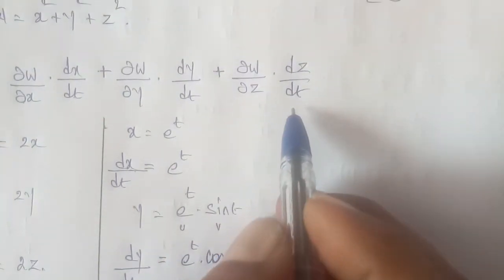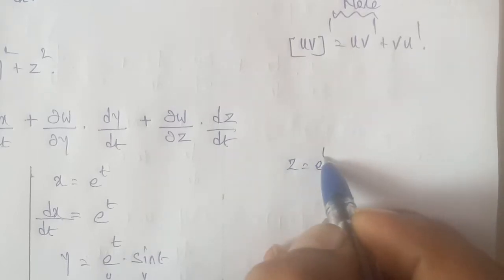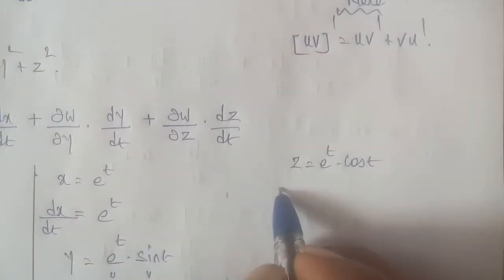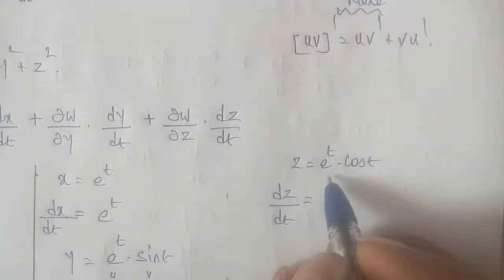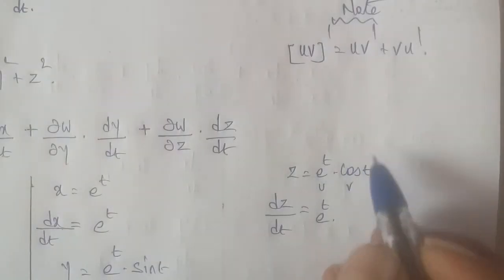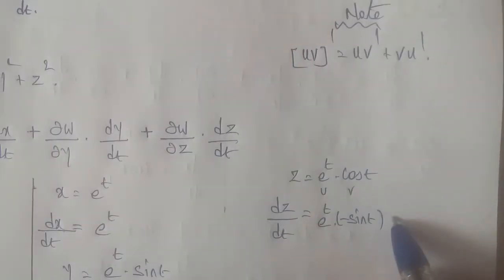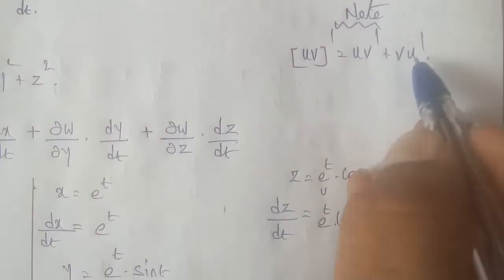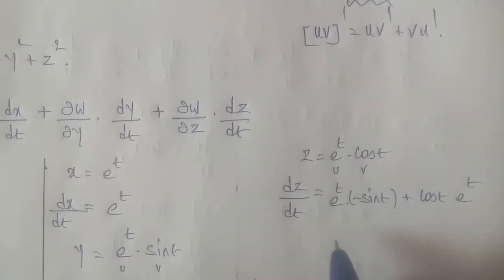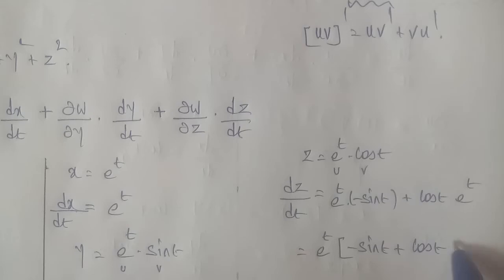For dz/dt: since z = eᵗ cos t, applying the product rule with u = eᵗ and v = cos t gives dz/dt = eᵗ(−sin t) + eᵗ cos t = eᵗ(cos t − sin t).